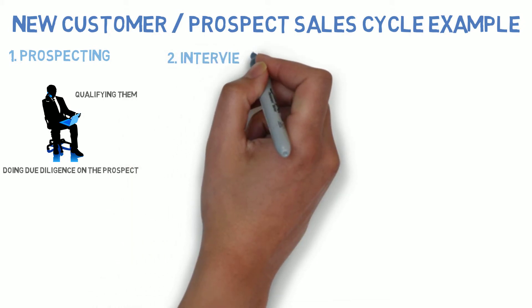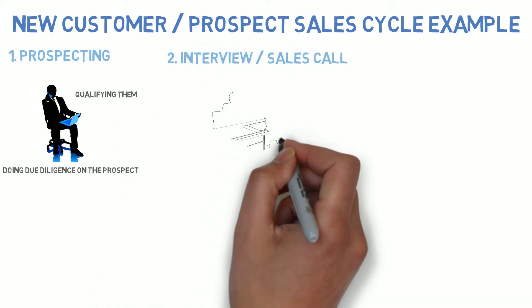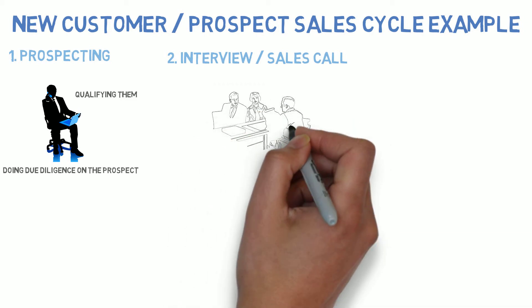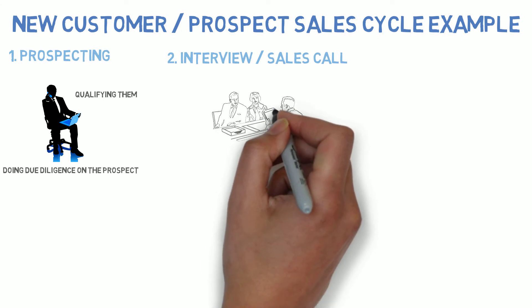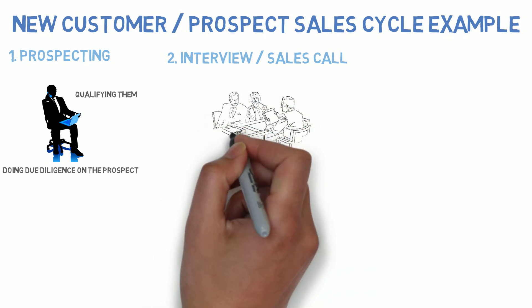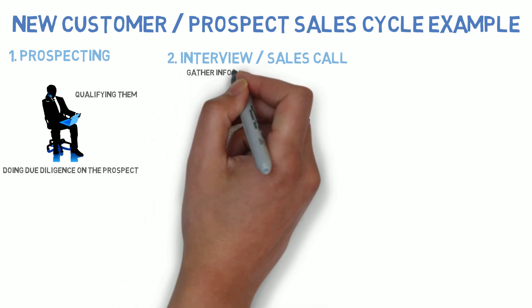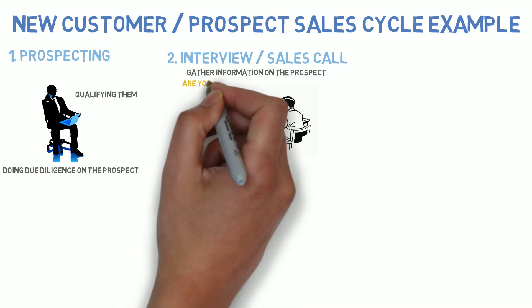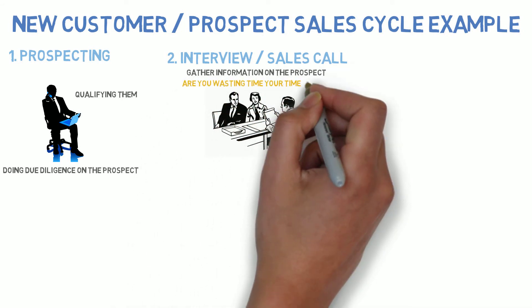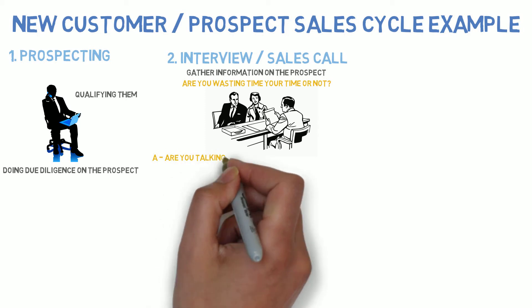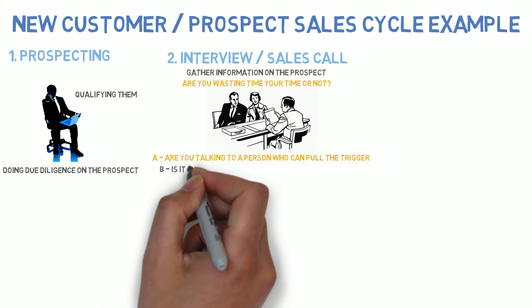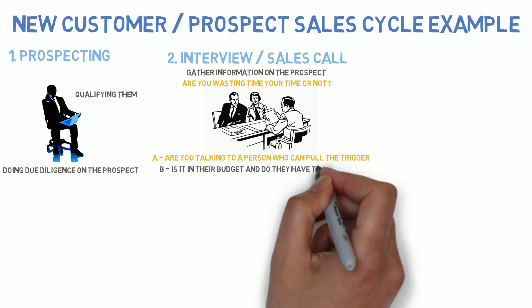The second stage would be the interview. Some people call it a sales call; I call it an interview. Because within that stage, you have to gather information on the prospect. All that information does is help you qualify — am I wasting my time or not? There are certain things you need to gather: are you talking to a person who can pull the trigger? Is it in their budget? Do they have the budget?